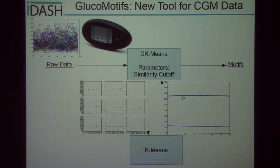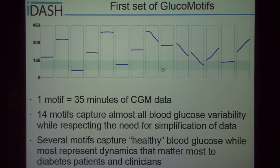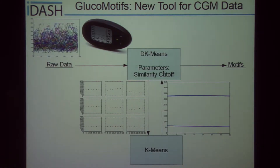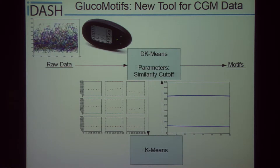These motifs are only similar to some of the data from the original dataset. We remove the data that is similar to it, as measured by the similarity cutoff, and then send it back through K-means. This is done until there is no more data left, at which point all of the motifs from K-means are collected together and sent out as the set of motifs for individuals with diabetes.